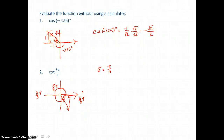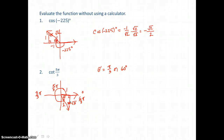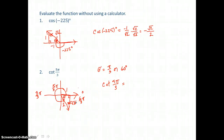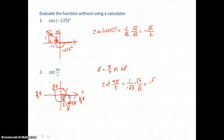Since 1 third pi equals 60 degrees (because 180 degrees divided by 3 is 60), we have a 30-60-90 degree special triangle with sides in the ratio 1, 2, square root of 3. Right of the origin is positive, so the side of length 1 stays positive, but down is negative, so the leg of length square root of 3 becomes negative square root of 3. The hypotenuse is always positive. Applying the definition of cotangent — adjacent over opposite — gives 1 over negative square root of 3, which rationalizes to negative square root of 3 over 3.